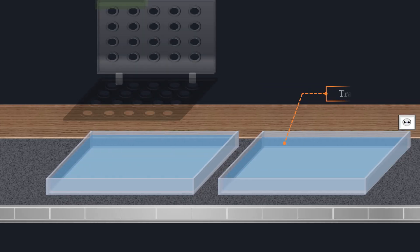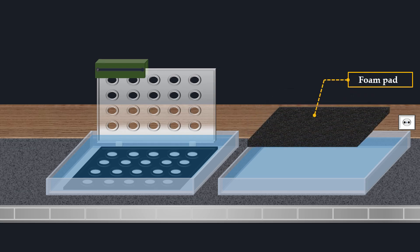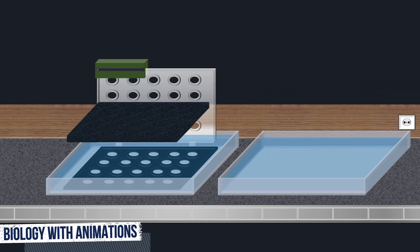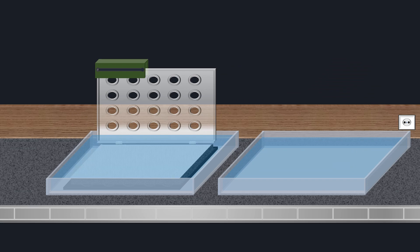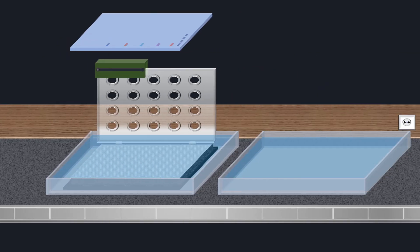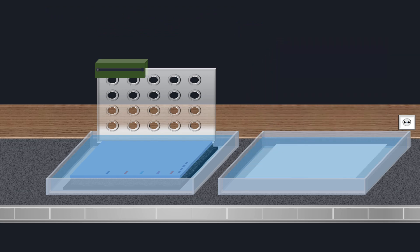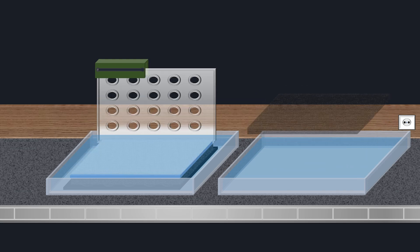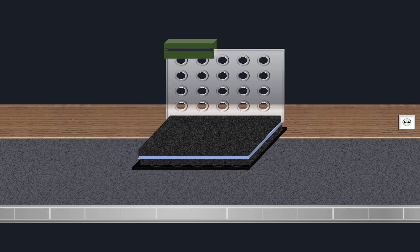To make a blotting sandwich, a gel holder cassette is immersed in transfer buffer with the black side down and white side up. A fiber foam pad is immersed in transfer buffer and laid on the black side of the cassette. A piece of filter paper is soaked in transfer buffer and placed on top of the fiber pad. The equilibrated gel is carefully placed on the blotting paper. A nitrocellulose or polyvinylidene difluoride membrane is soaked in transfer buffer and placed squarely on the gel. A second sheet of blotting paper wetted with transfer buffer is placed on top of the membrane, followed by a second fiber pad. Finally, the gel holder cassette is closed and locked with a clamp.